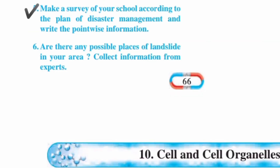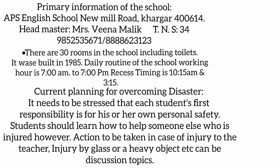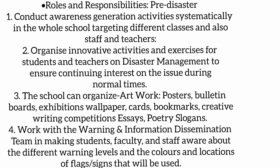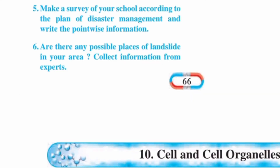Question number five: make a survey of your school according to the plan of disaster management and write point-wise information. Question number six: are there any possible places of landslides in your area? Collect information from an expert.